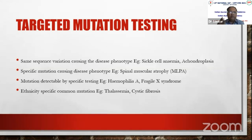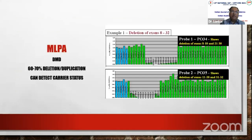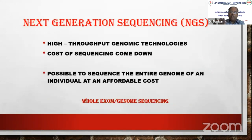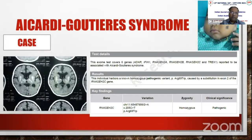For conditions like sickle cell anemia and achondroplasia — where the same mutation accounts for nearly 100% of cases — targeted mutation testing is used. For SMA, MLPA is appropriate as deletion is the primary mutation. For hemophilia A, inversion-specific PCR is used. For common mutations in thalassemia and cystic fibrosis, targeted common mutation screening is done before advanced testing. For DMD, 70% of cases involve deletion or duplication; for SMA, 99% involve deletion or duplication — MLPA is the first-line test. Gaucher disease requires full gene sequencing.